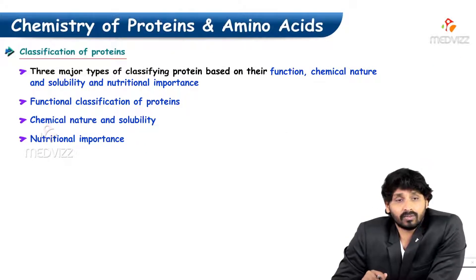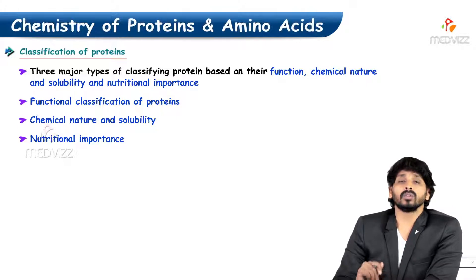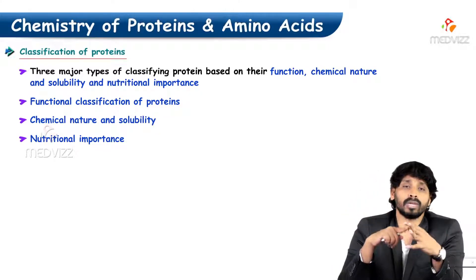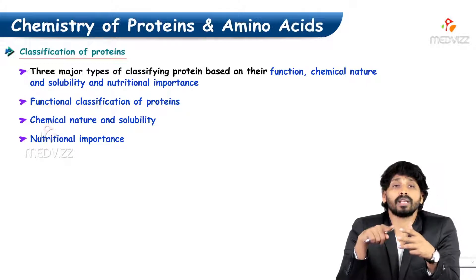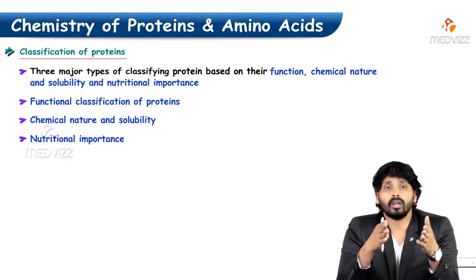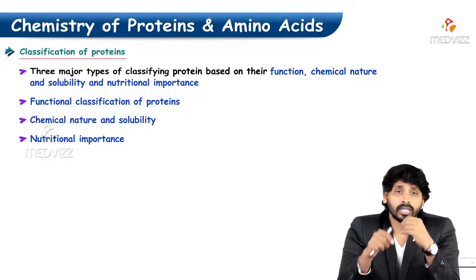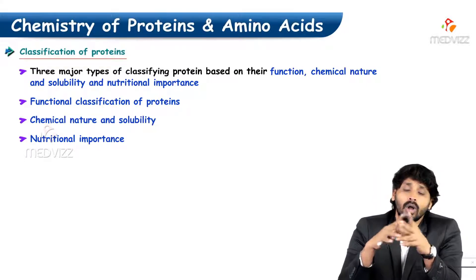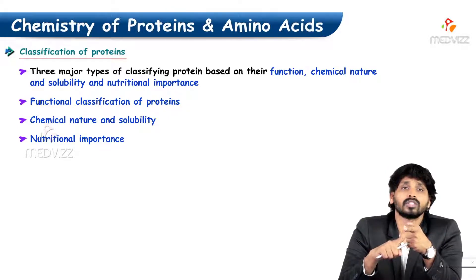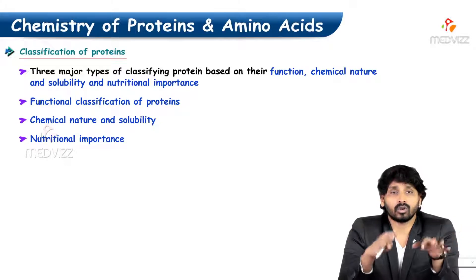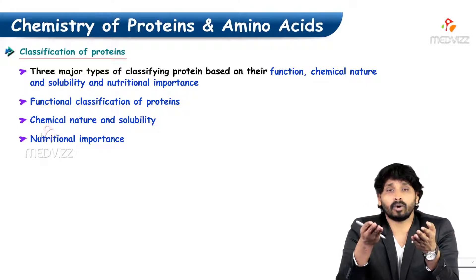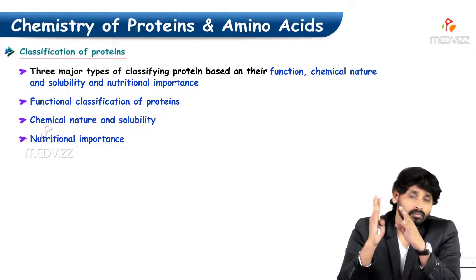Now coming to the classification of proteins. Like amino acids, proteins also have classification. There are three types: one based on function — which protein is involved in what function; second based on chemical nature and solubility — how they are made up of and whether they are soluble or insoluble; and the third based on nutritional importance.